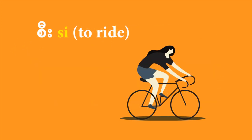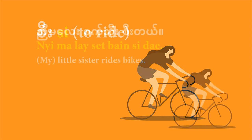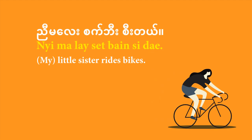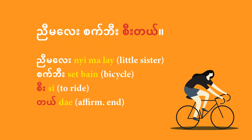First, let's take a look at a simple verb like 'si,' which means to ride, as in ride a car, ride a train, or ride a bike. So, 'nyamale sabayn si dare' — that means little sister rides bicycles. Nyamale is the word for younger sister. Sabayn, or mechanical wheel, is how the Burmese refer to bicycles. Si is your verb, to ride. And 'dare' is the affirmative sentence-ending particle.